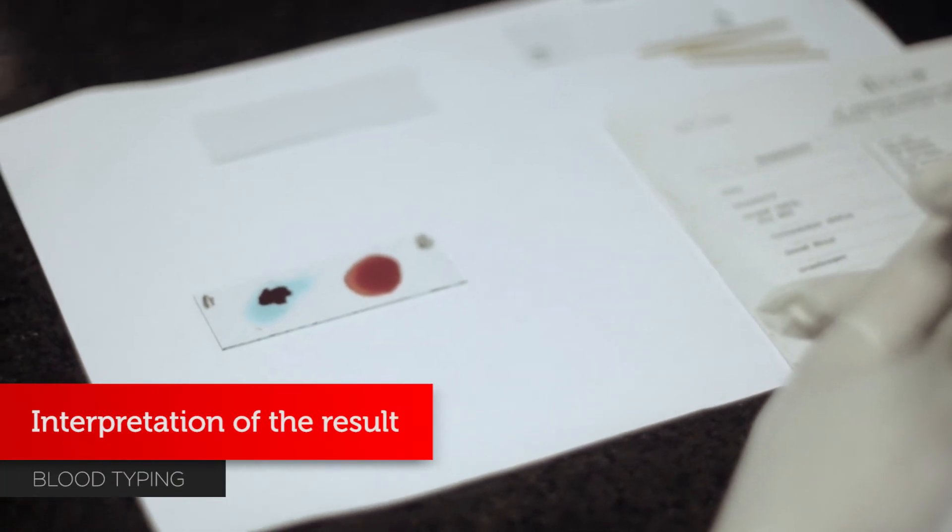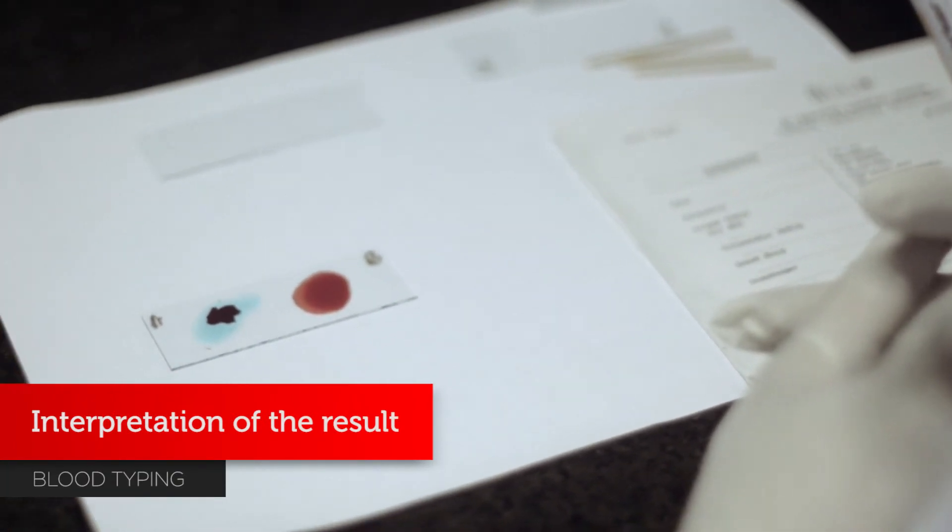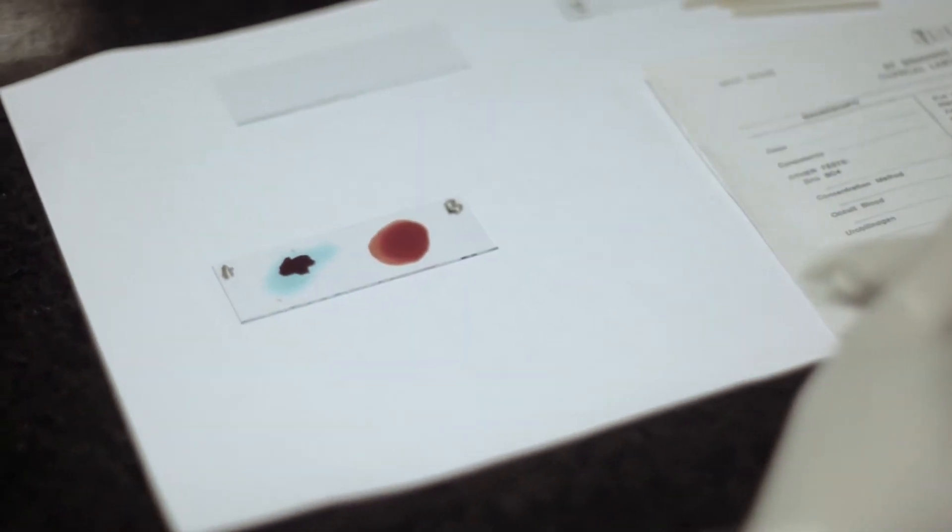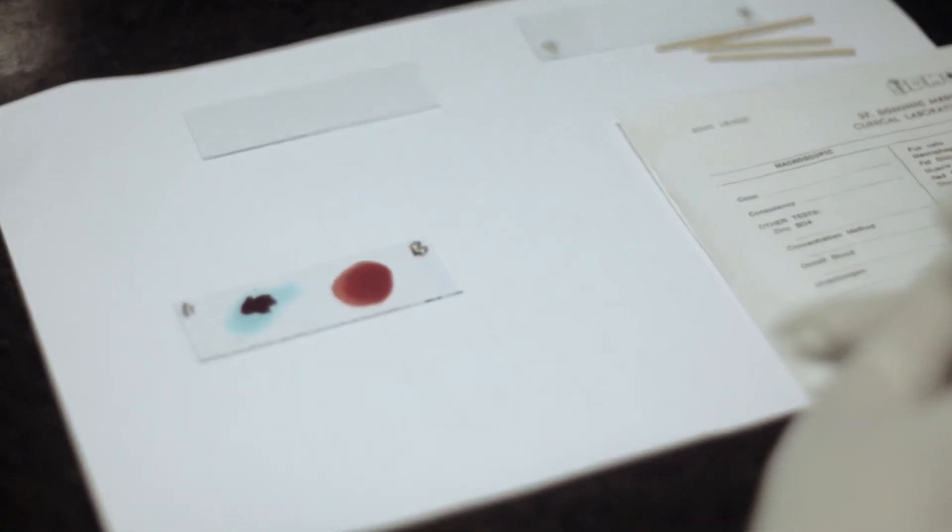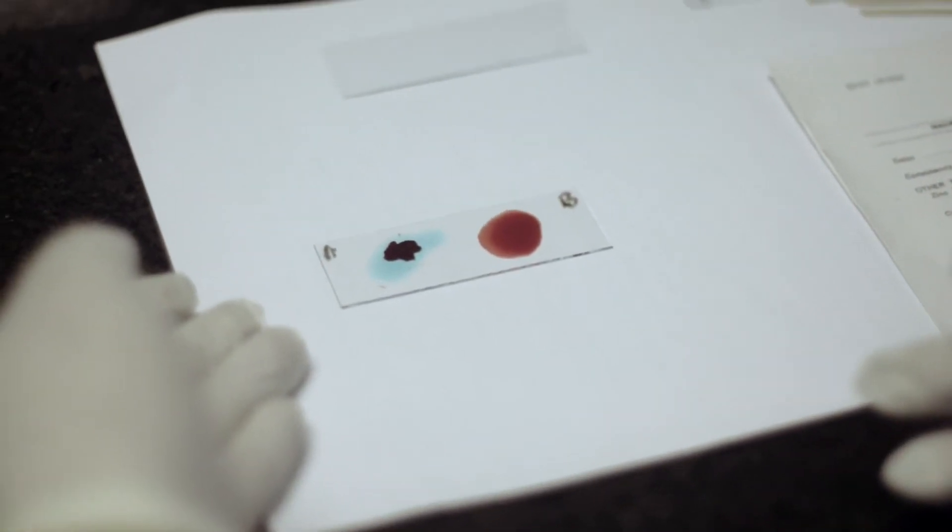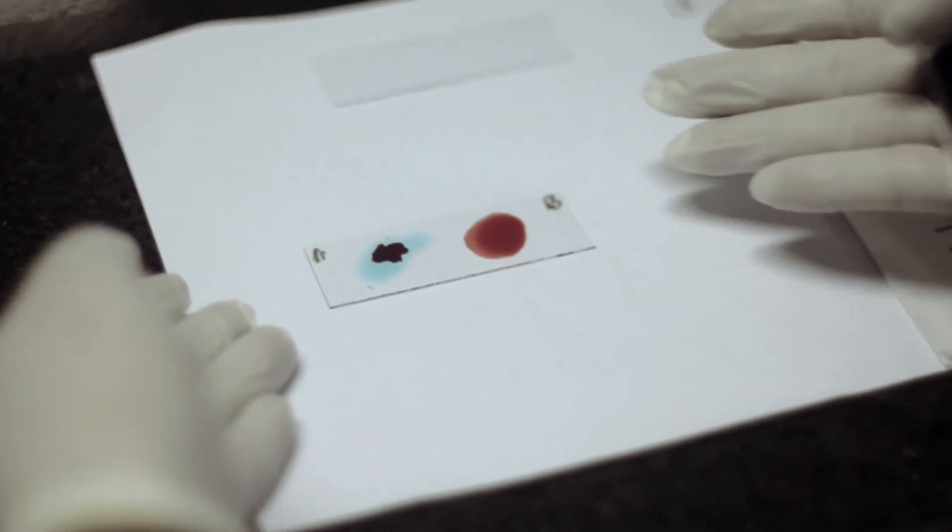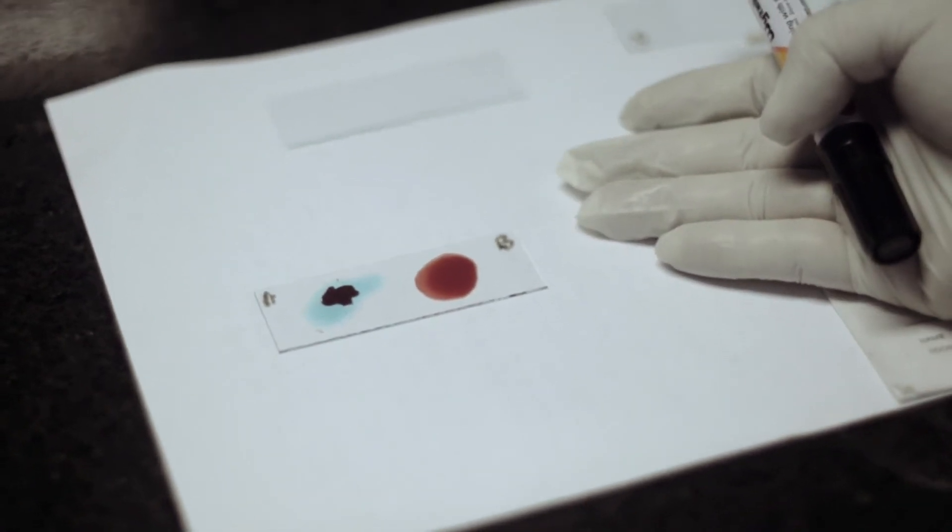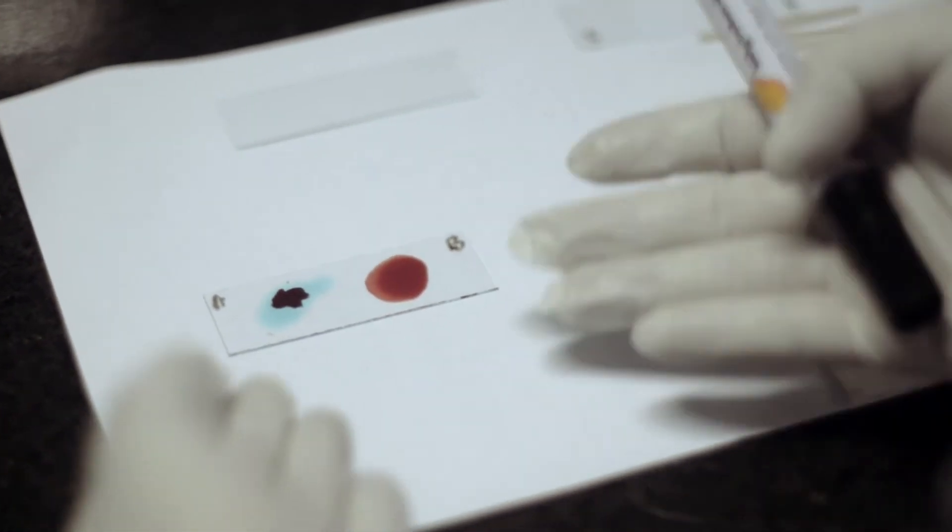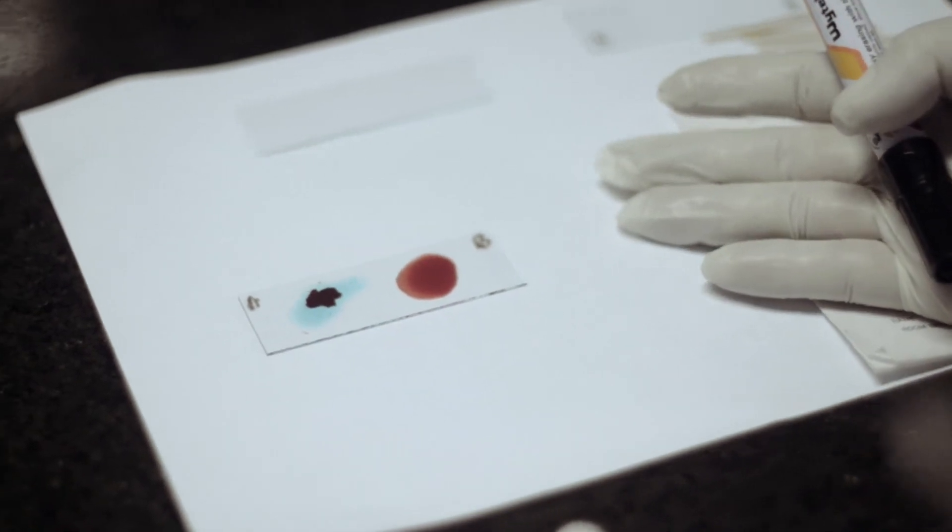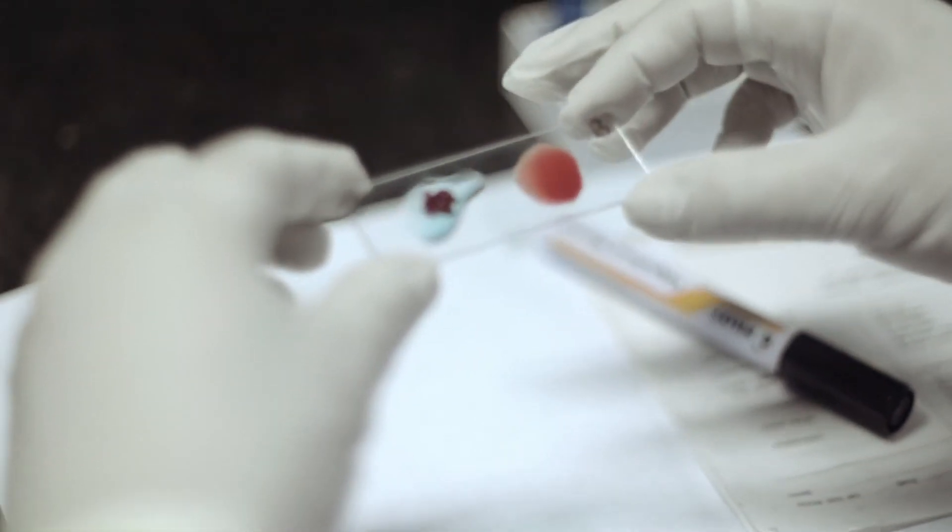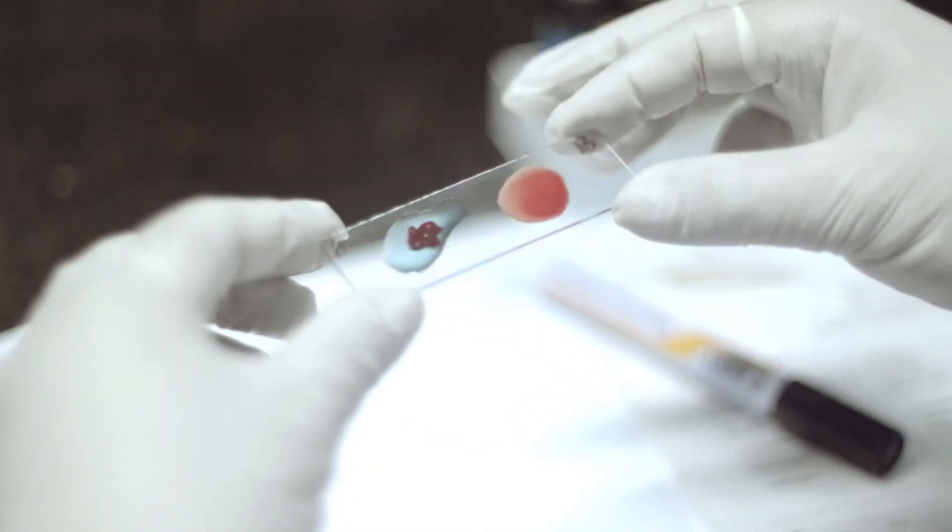Interpretation of the result: The blood group is determined on the basis of agglutination or absence of agglutination with anti-A serum and anti-B serum. The marked side where agglutination is observed is said to be the blood group or blood type. If both marks show agglutination, the blood group or type is AB. And when both marks fail to show agglutination, the blood group or type is O.